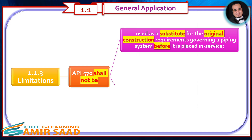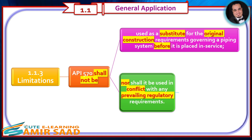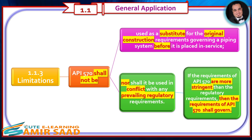Limitations: API 570 shall not be used as a substitute for the original construction requirements governing a piping system before it is placed in service, nor shall it be used in conflict with any prevailing regulatory requirements. If the requirements of API 570 are more stringent than the regulatory requirements, then the requirements of API 570 shall govern.